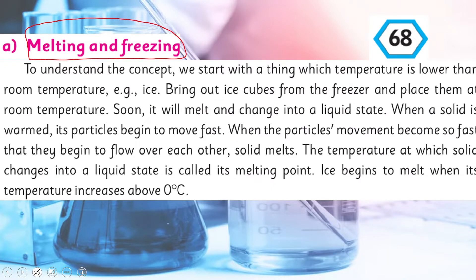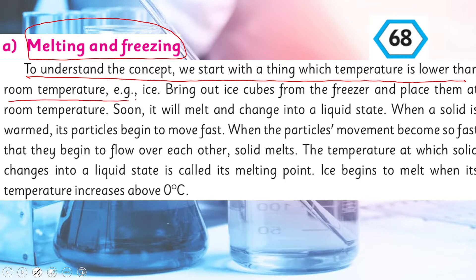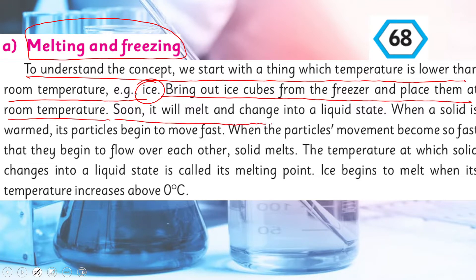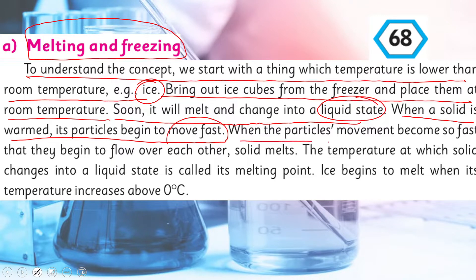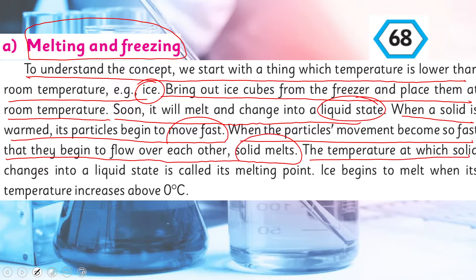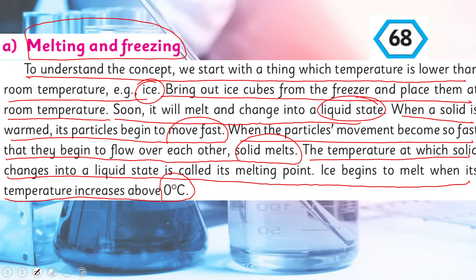Melting and freezing. To understand the concept, we start with something whose temperature is lower than room temperature — for example, ice. Bring out ice cubes from the freezer and place them at room temperature. Soon it will melt and change into liquid state. When a solid is warmed, its particles begin to move fast. When the particles' movement becomes so fast that they begin to flow over each other, the solid melts. The temperature at which a solid changes into liquid state is called its melting point. Ice begins to melt when its temperature increases above zero degrees centigrade.